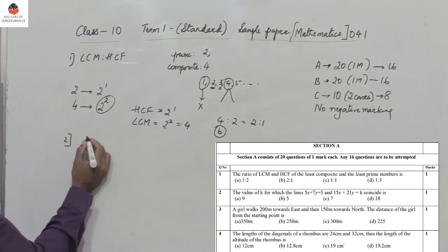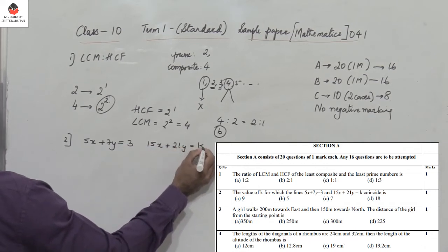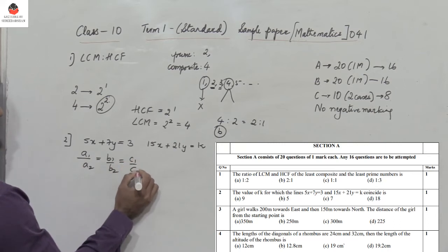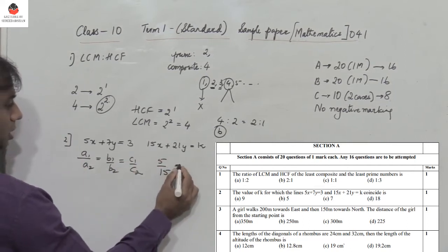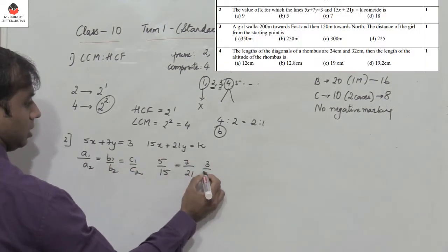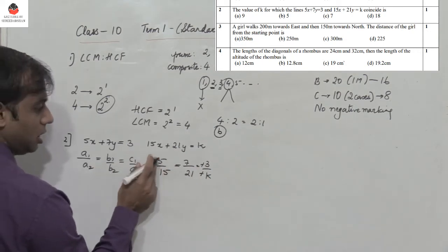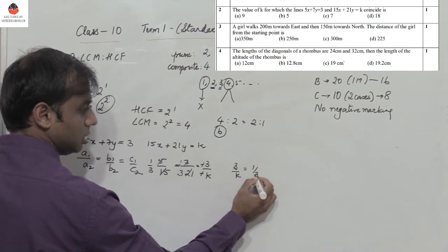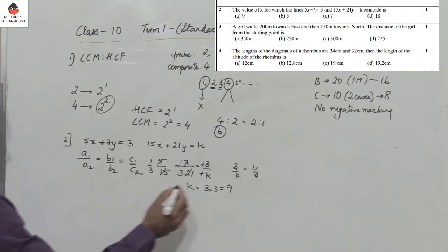Question 2: Find the value of K for the lines 5x + 7y = 3 and 15x + 21y = K if they coincide. For coinciding lines, A1/A2 = B1/B2 = C1/C2. So 5/15 = 7/21 = 3/K, giving ratio 1/3. Therefore 3/K = 1/3, so K = 9. The answer is option A.